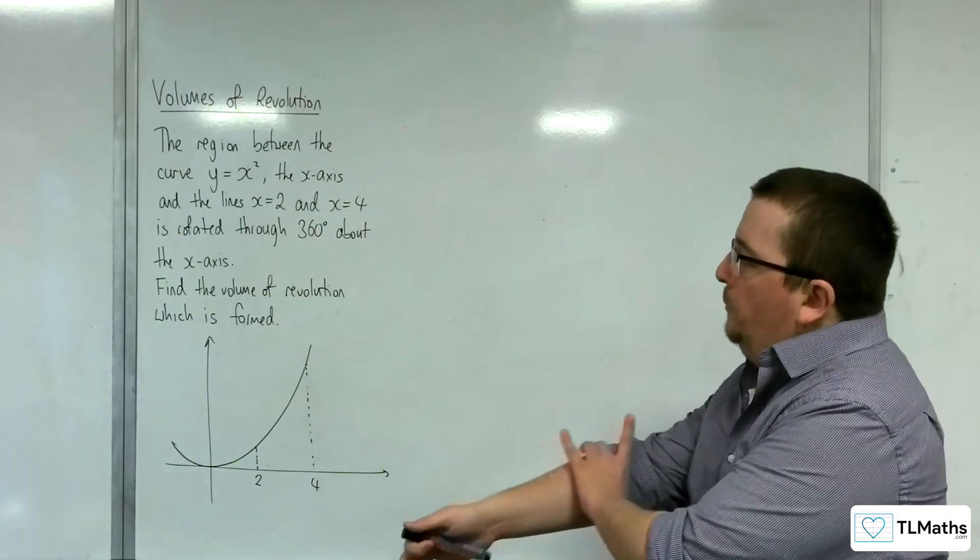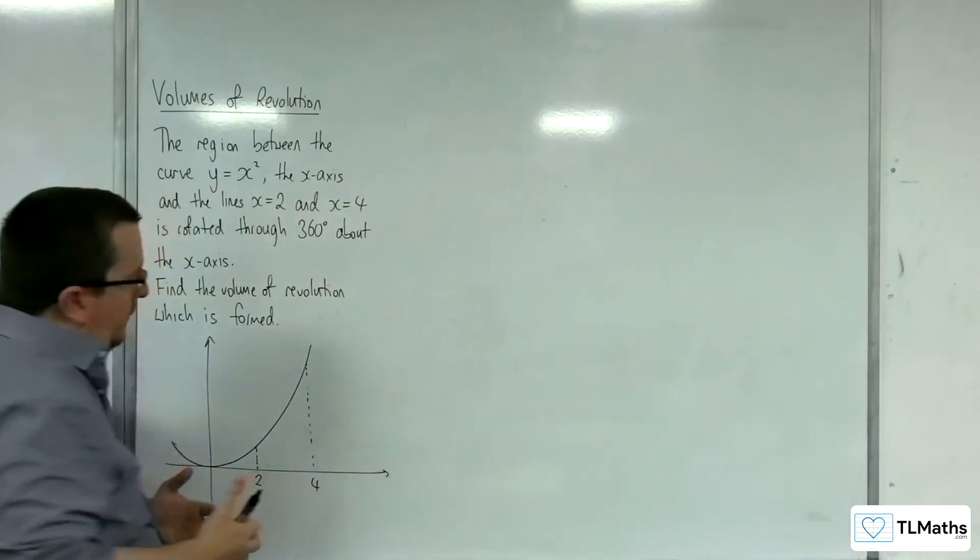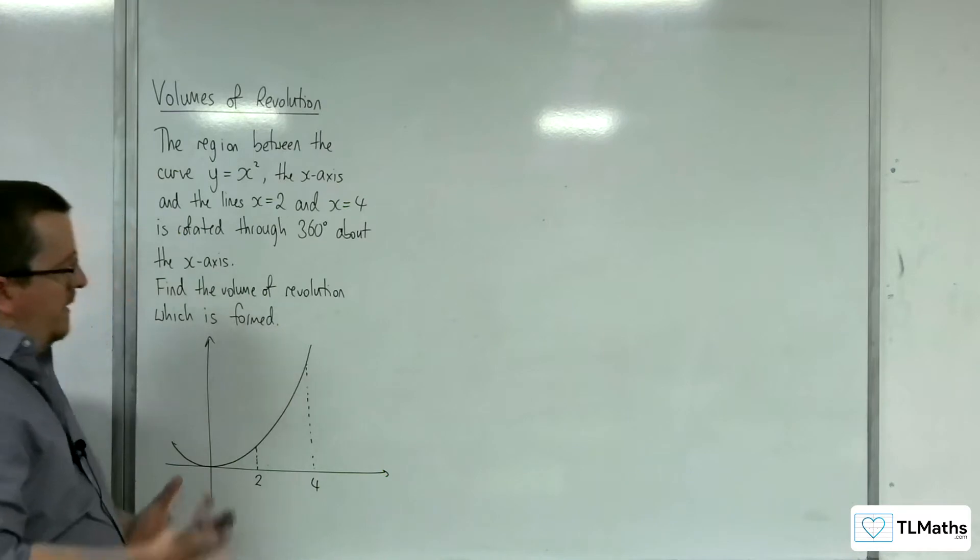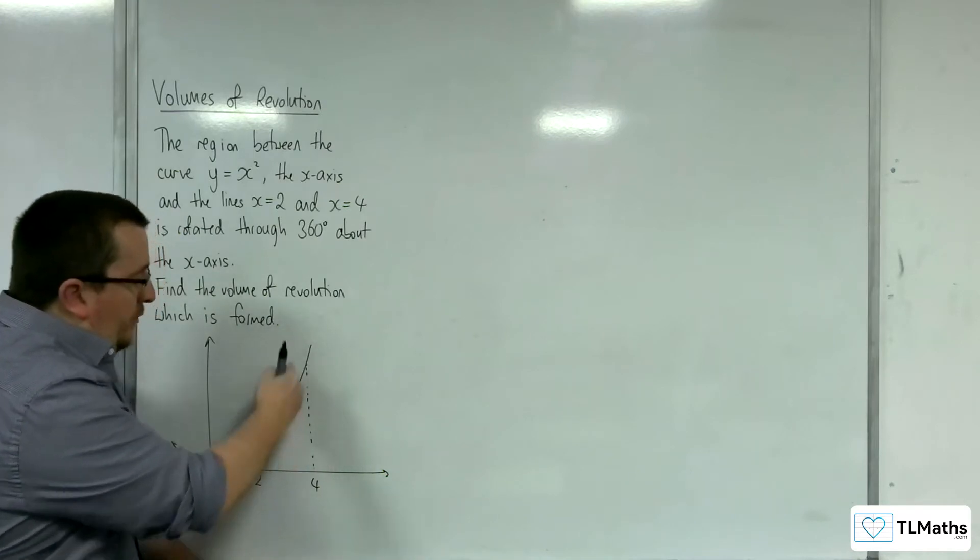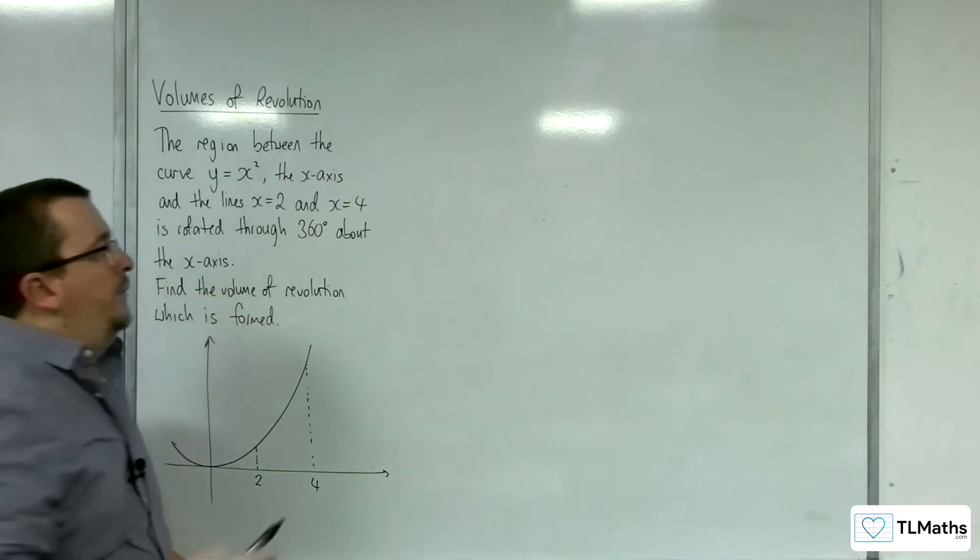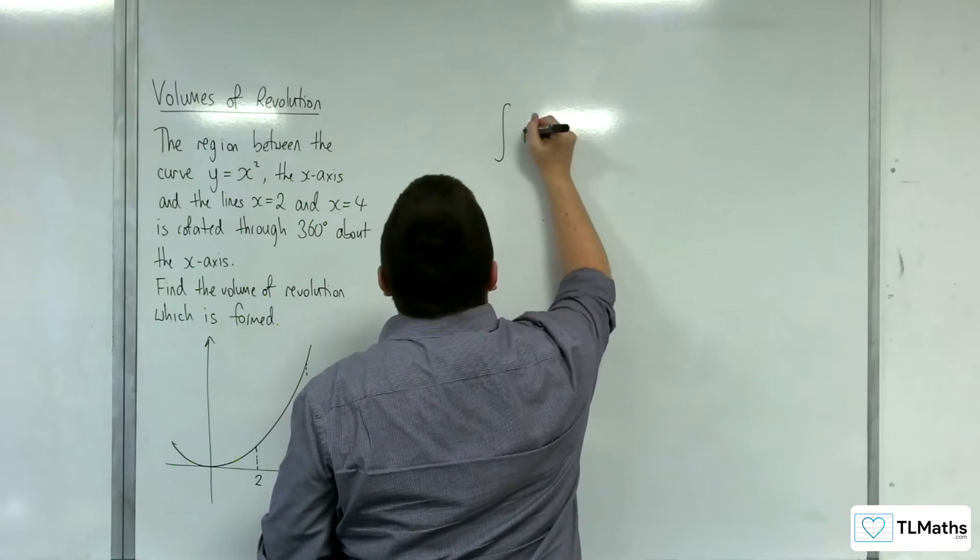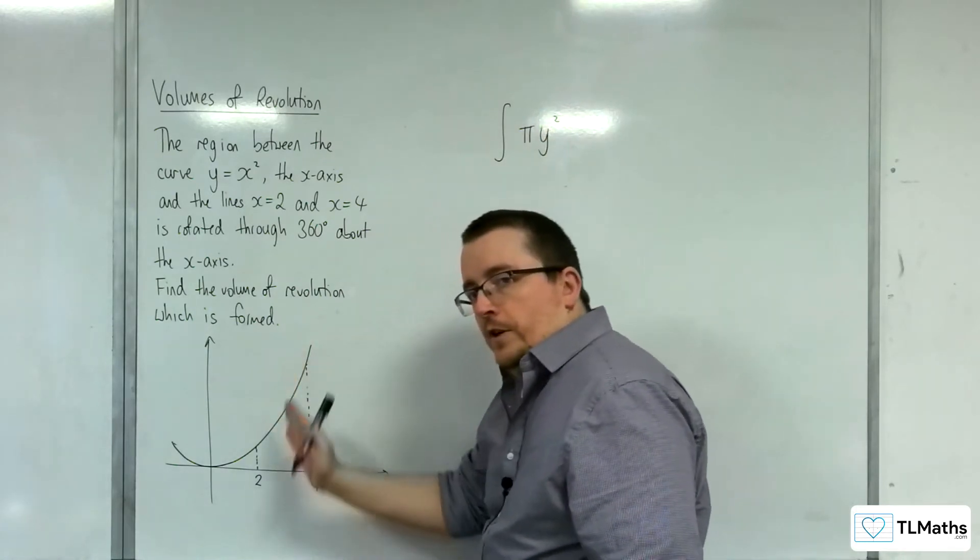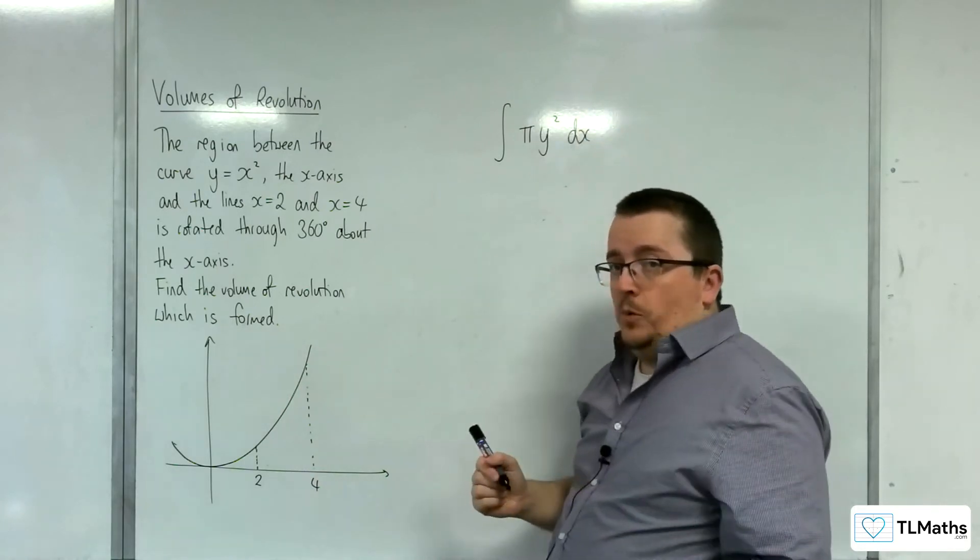So what we need to do is remember that this is a formula that's constructed from pi r squared. Now each of your strips, the radius will be dependent on y. So the way you need to remember this is you're going to be integrating pi y squared when you're taking these vertical strips, then with respect to x.